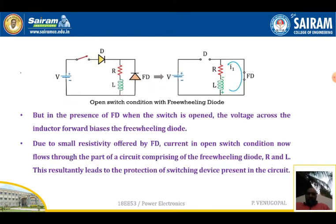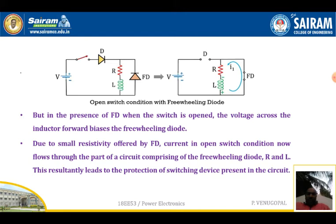The freewheeling diode plays no important role under normal or steady-state conditions. Now let us understand how the freewheeling diode works in the open circuit condition. The figure shows the switch is open-circuited. When the switch is open-circuited, no current flows — the diode becomes reverse biased and becomes open-circuited, as shown in figure 2.